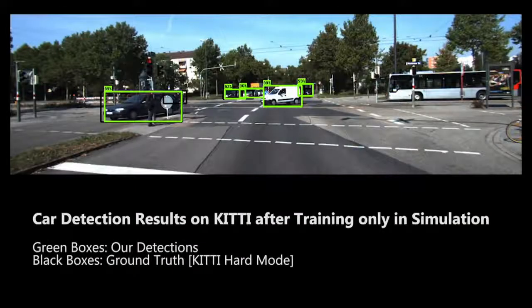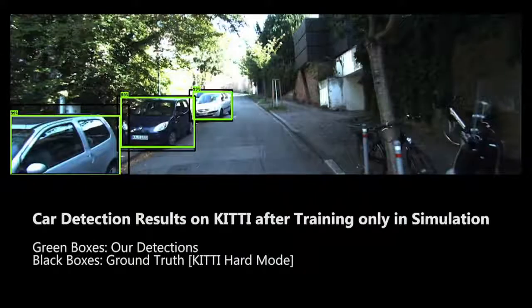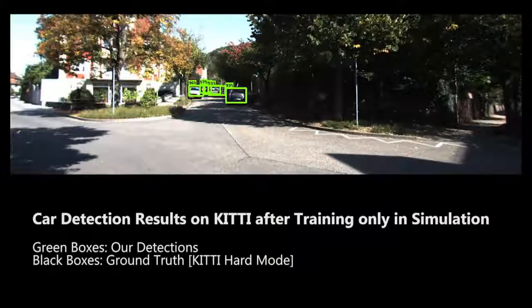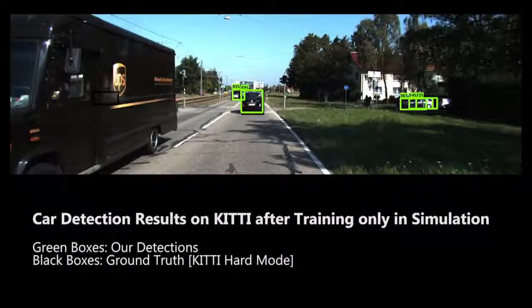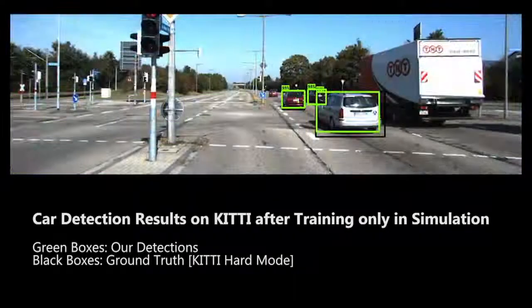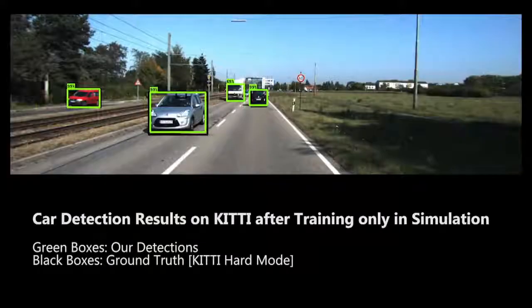Here we show detection results of cars on the KITTI benchmark after training a neural network using only synthetic data generated from structured domain randomization. The green boxes show the detection results, which in many cases are almost indistinguishable from the ground truth shown as black boxes.